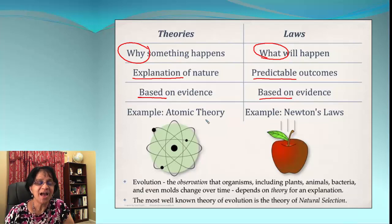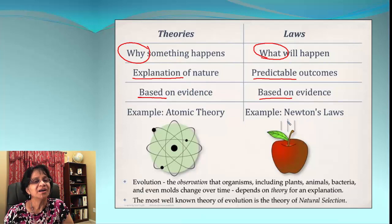Here's an example: Atomic Theory is a theory based upon observations and explanations we can use to explain how it works. The example for a law is Newton's Laws of Motion, and they are universally accepted.